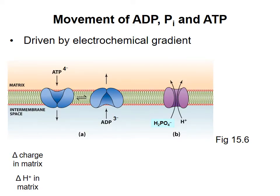The inner mitochondrial membrane contains an antiporter that moves ATP out of the matrix and ADP from the intermembrane space into the matrix. A different transporter, a symporter, moves a phosphate ion along with a proton into the matrix.